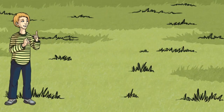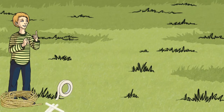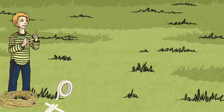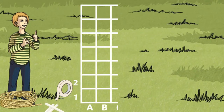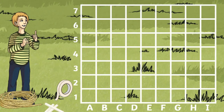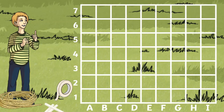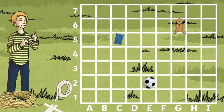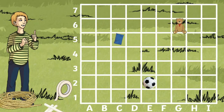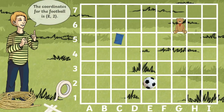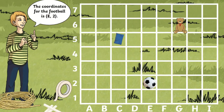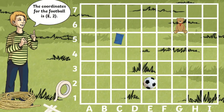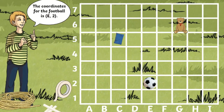Or how about taking learning outdoors? Using chalk, rope, or tape, make your own coordinates grid. Children can add items to the grid and get their peers to read the coordinates using an item, or pupils can get their peers to plot a given coordinate with an item.